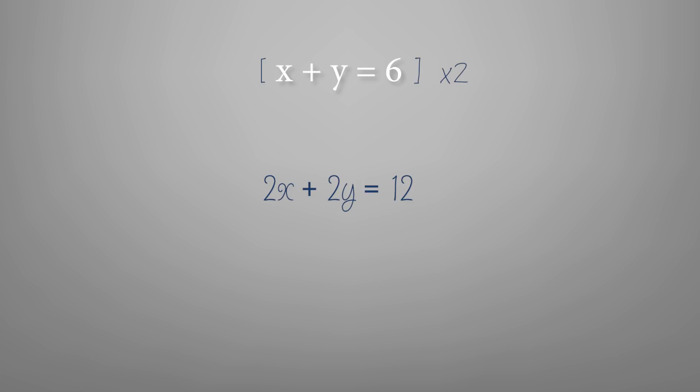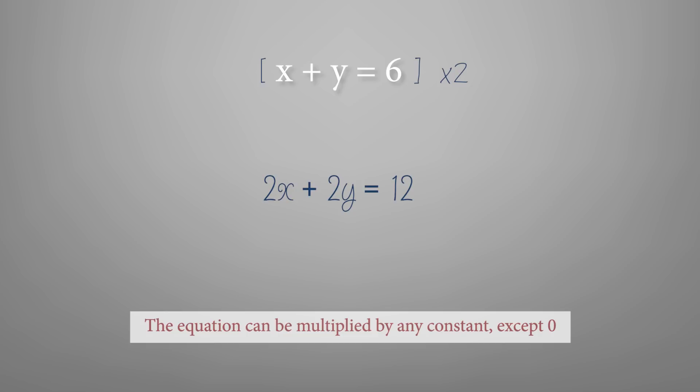This is one of the concepts involved in simultaneous equations — that is, the equation can be multiplied by any constant, for example 2, 4, 5, etc., except 0.